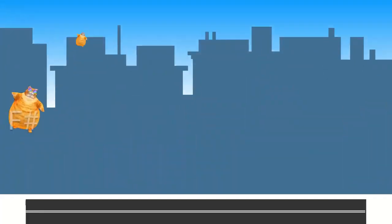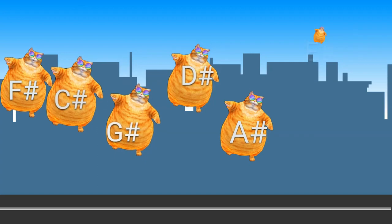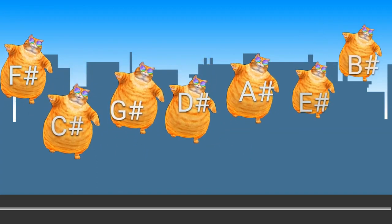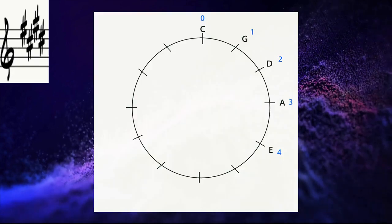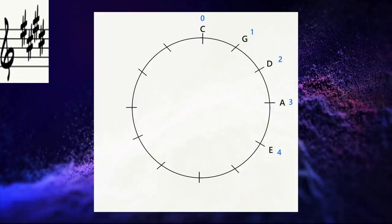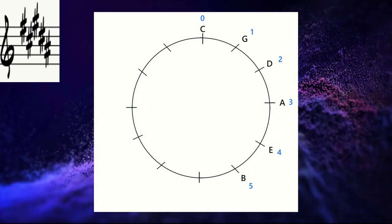Going on, then we come to the key of E with four sharps - you know what they are - and then the key of B with five sharps, you know what those are.